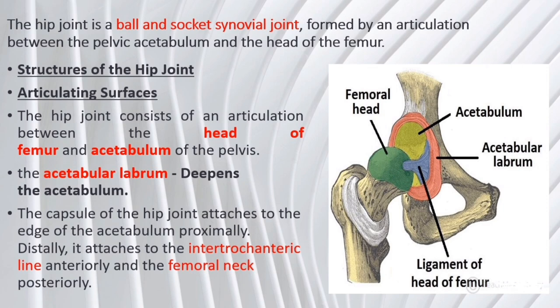Articulating surfaces. The hip joint consists of an articulation between the head of femur and acetabulum of the pelvis. The acetabulum is a cup-like depression located on the inferolateral aspect of the pelvis. Its cavity is deepened by the presence of a fibrocartilaginous collar, the acetabular labrum. The head of femur is hemispherical and fits completely into the concavity of the acetabulum. Both surfaces are covered in articular cartilage, thicker at the places of weight bearing. The capsule attaches to the edge of the acetabulum proximally, and distally to the intertrochanteric line anteriorly and the femoral neck posteriorly.